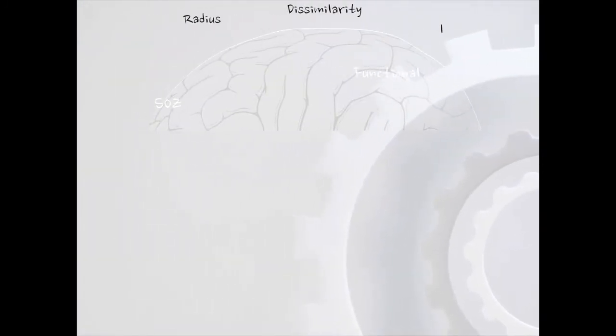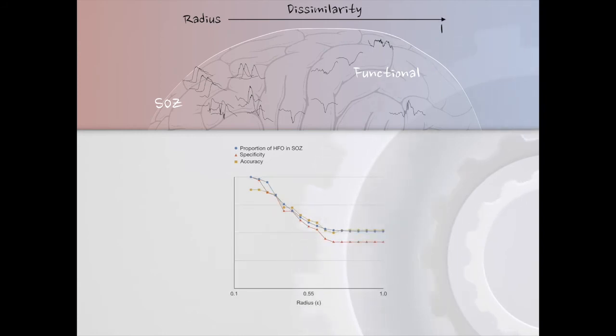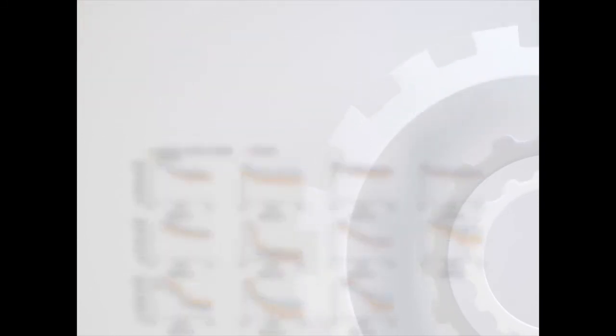We detected the stereotypical HFOs at changing radius from 0.05 to 1. The specificity and percentage of HFOs inside the seizure onset zone achieved 100% in all patients when the most similar HFOs are used for seizure onset zone localization, which means all of the HFOs firstly being clustered were generated by the seizure onset regions. As the radius increased to 1, the overall specificity and accuracy decreased considerably.